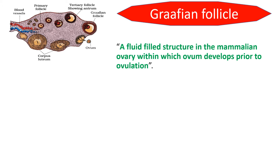By looking at this sectional view of the ovary, we are able to see the Graafian follicle. In the cortical region of the ovary, there are different developmental stages of follicles: primary follicle, secondary follicle, tertiary follicle, and Graafian follicle.